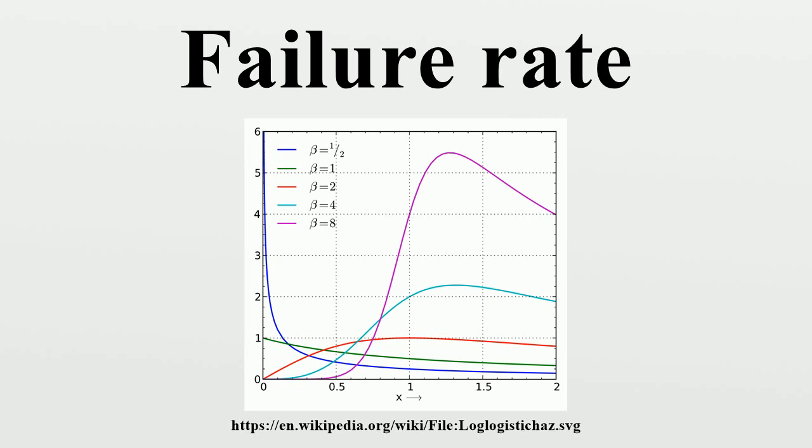A decreasing failure rate describes a phenomenon where the probability of an event in a fixed time interval in the future decreases over time. A decreasing failure rate can describe a period of infant mortality where earlier failures are eliminated or corrected and corresponds to the situation where λ is a decreasing function. Mixtures of DFR variables are DFR.